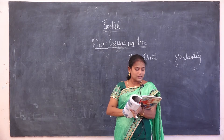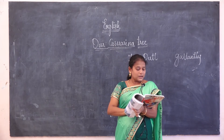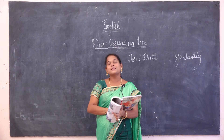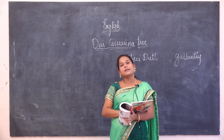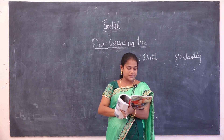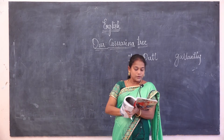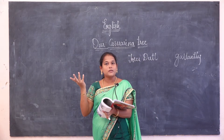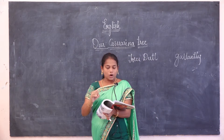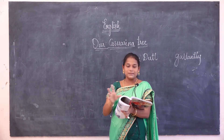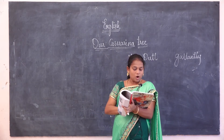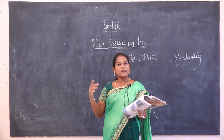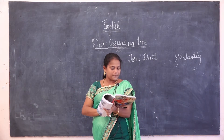The flowers hung in crimson clusters — 'cluster' means bunch, and 'crimson' means a dark red color, a bright red color. So the flowers are hanging on the tree like dark red color bunches. All the boughs among — the branches spread towards the sky, with these dark red flower bunches hanging among them.